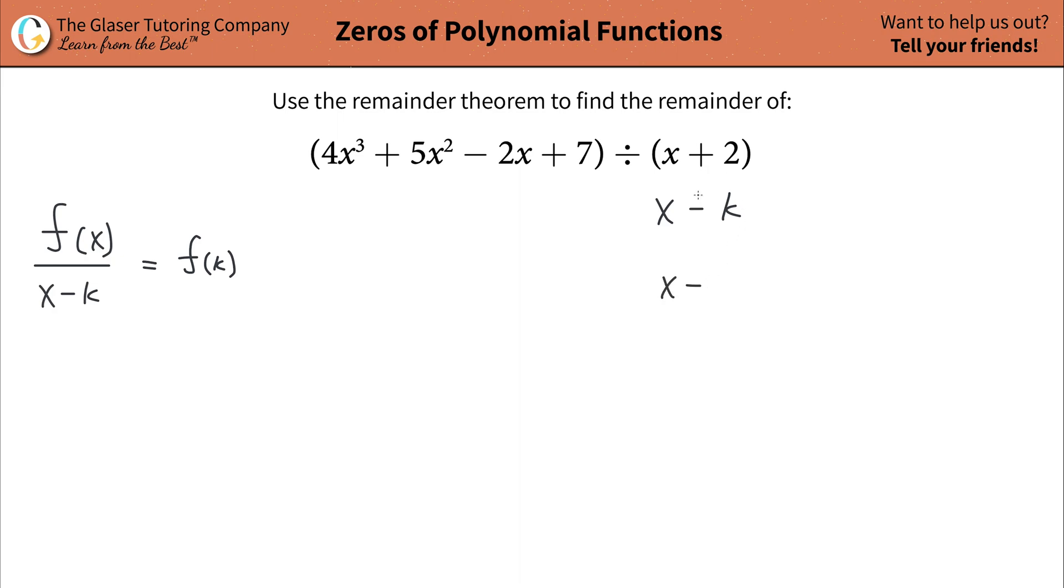But if you change this sign, then you also have to change the sign of the number. In other words, this has to become a negative two. Because subtracting a negative two is the same thing as adding two. So this is equivalent to this.